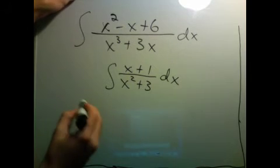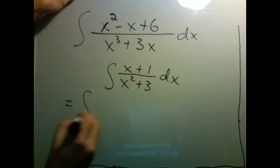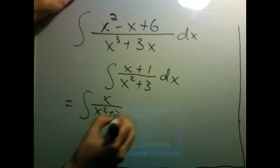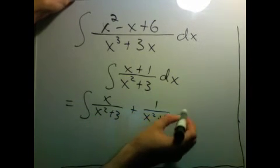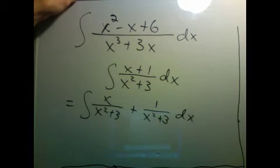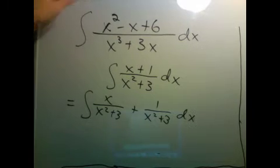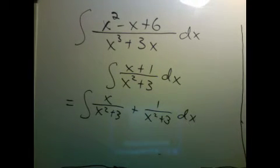So this I'm going to split up into two integrals. I'll have x over x squared plus 3 plus 1 over x squared plus 3 dx. With this piece, I can use a substitution. And with this piece, I have to turn it into one of those things that will give me a tangent inverse.